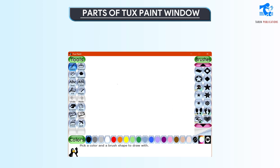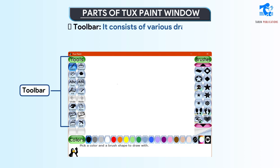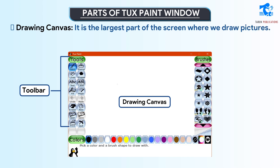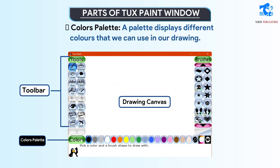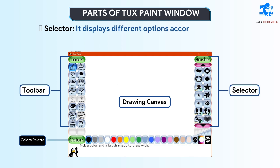Parts of Tuxpaint window. The Tuxpaint window is divided into 4 main parts. Toolbar: it consists of various drawing tools. Drawing canvas: it is the largest part of the screen where we draw pictures. Colors palette: a palette displays different colors that we can use in our drawing. Selector: it displays different options according to the tool that we select from the toolbar.